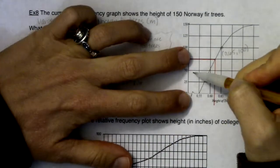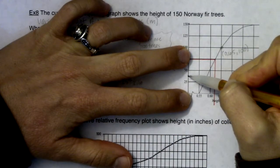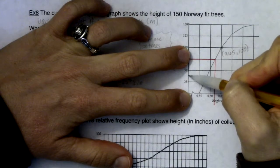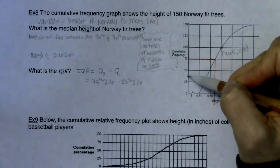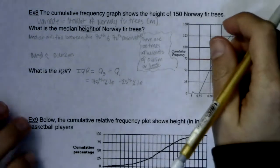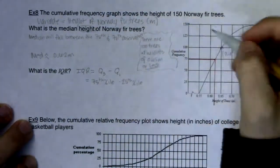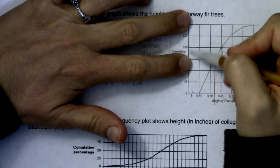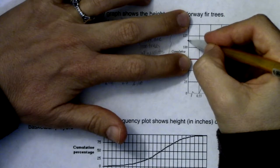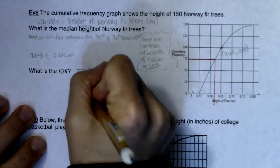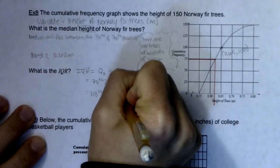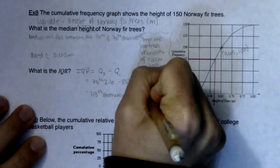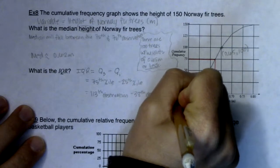Q1 is the median of the first half of your data. If I want to cut the first half in half again to get the 25th percentile, I'm looking at around the 38th observation — half of 75. The same logic applies for Q3: it's the 75th percentile, or the median of the upper half of my data, which is around the 113th observation. So IQR involves the 113th observation minus the 38th.